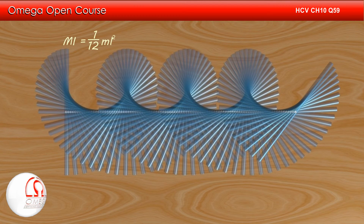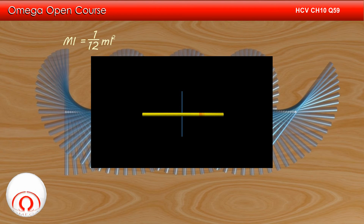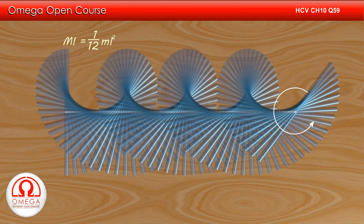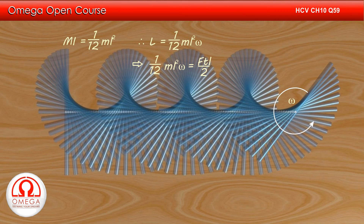The moment of inertia of a rod about its center of mass is (1/12)mL². If omega is the angular speed of the rod, then the angular momentum due to rotation is (1/12)mL² times omega. This angular momentum must be equal to FTL by 2.